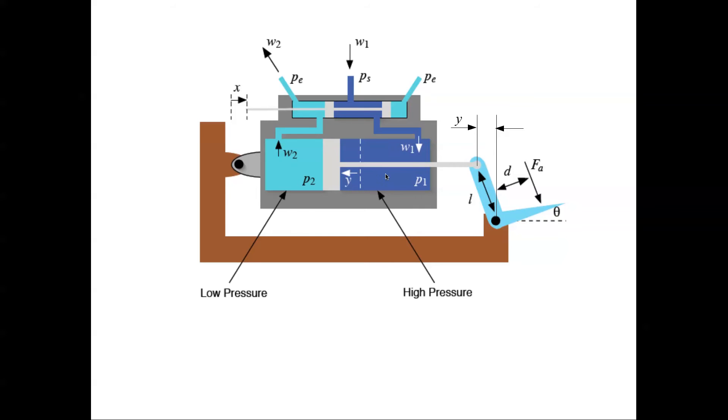The pressure on the high side of the piston is P1, the pressure on the low side of the piston is P2. P1 is different from Ps because the fluid flows through an orifice.